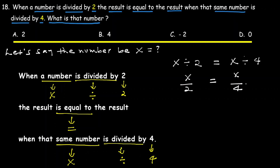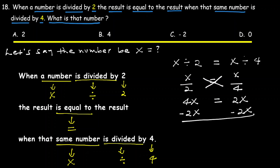Now we solve the equation. Using cross multiplication: x times 4 gives 4x, and 2 times x gives 2x. So we have 4x minus 2x equals zero, which gives 2x equals zero.